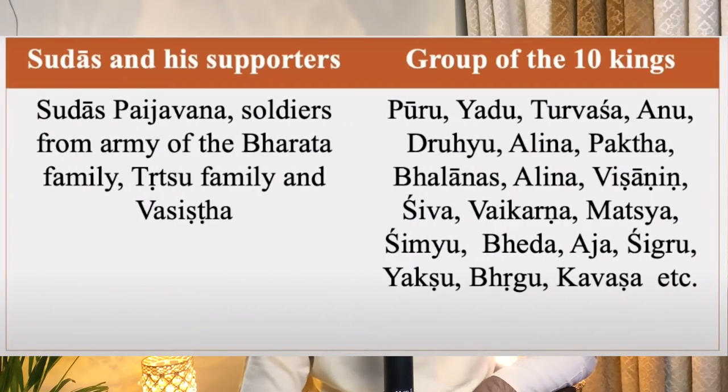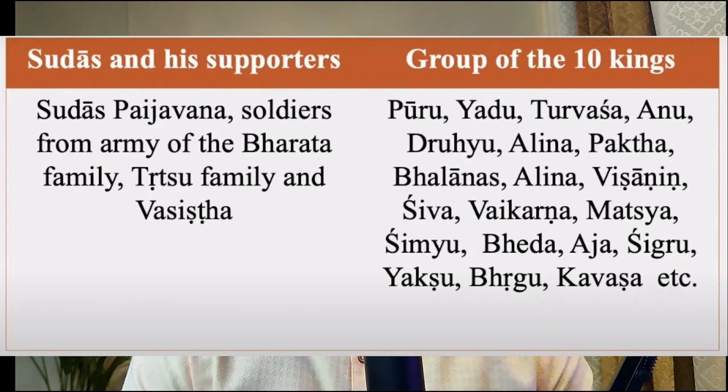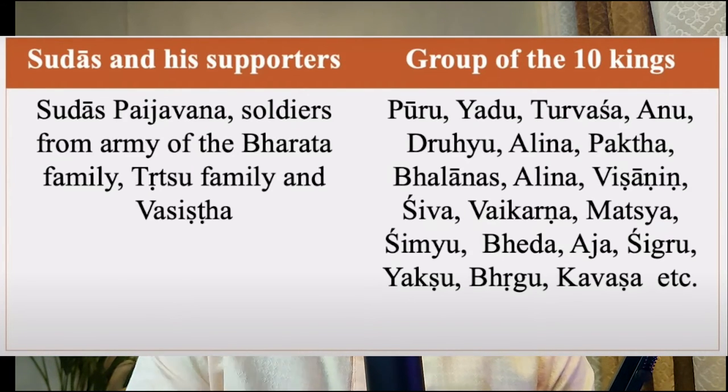Just to clear one more misconception: the Battle of Ten Kings doesn't mean that there were actually ten kings who fought against Sudhas. Before the Dasharajna period, the Bharatas, Purus, and Anus jointly defeated the Turvasas and Yadu clan in the battle of Harupriya. This battle is significant because it showed that Purus and Anus were actually allies of the Bharatas.